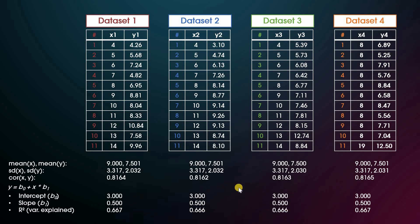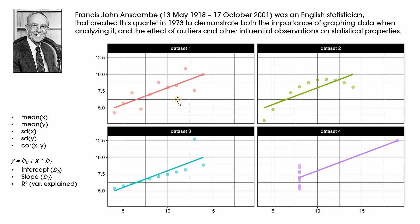With all these summary statistics being almost identical across the four data sets, you might wonder how similar they are to each other. You might be surprised to see that when you actually plot them, they look quite different. And that's exactly the point that Francis John Anscombe wanted to get across. He was an English statistician who wanted to show the importance of actually graphing the data when analyzing it and the effect that outliers or influential observations can have on statistical properties.